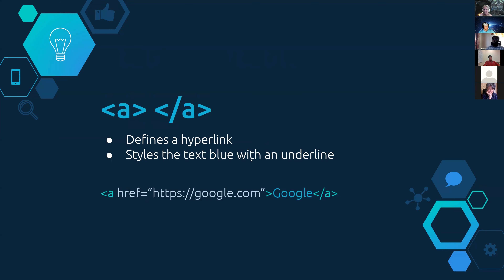The next one is the A tag. This is what links all websites together — it defines a hyperlink. It styles text blue with an underline by default, or purple if you've been to the website before. You have an A tag, href is the name of the attribute — it's something 'reference,' I don't know what the H stands for — then an equal sign, then quotes, and where you want that link to go. Between your opening and closing A tag, the word 'Google' would be the text shown on screen to click, and when clicked it would go to google.com.